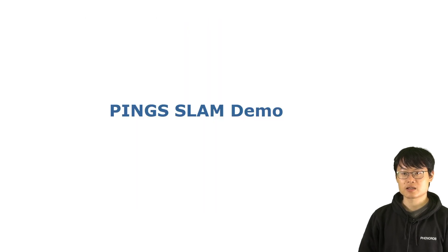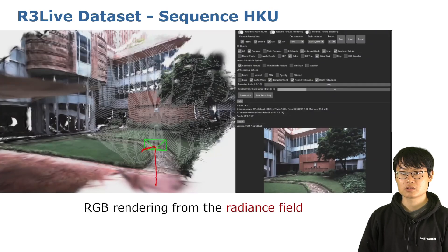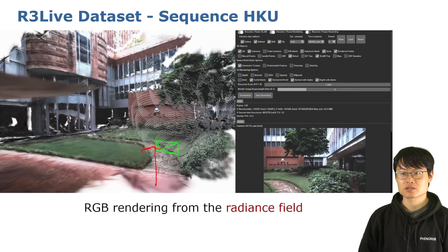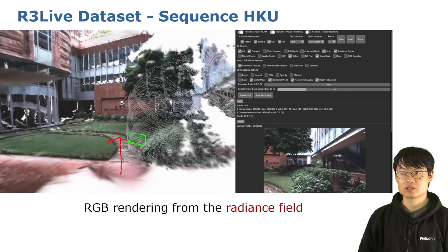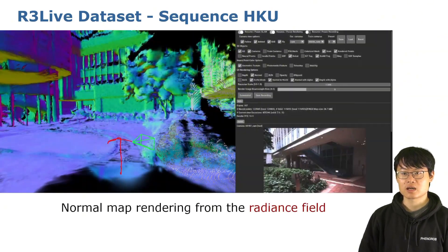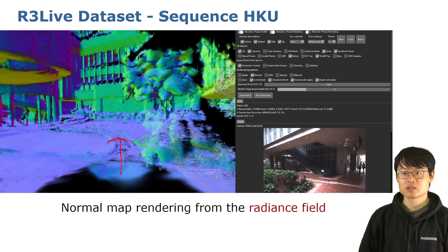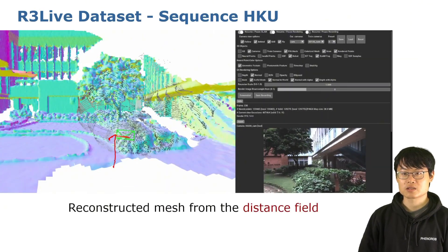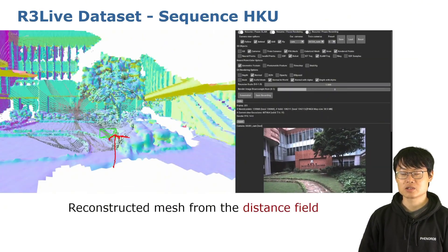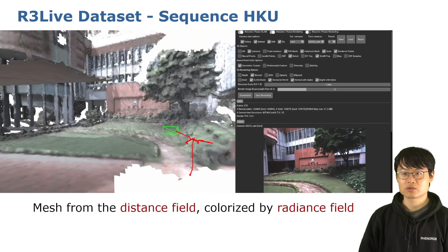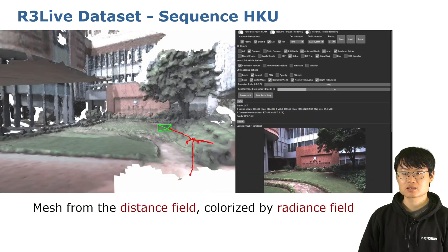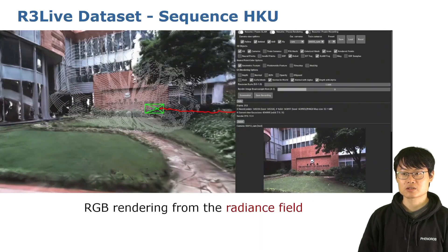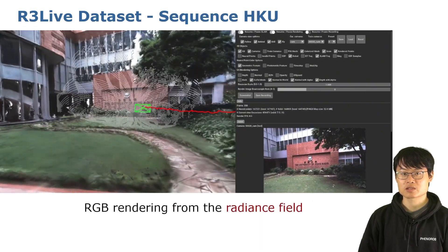We devise a LiDAR-visual SLAM system using the proposed map representation. Here we show the SLAM process on the RS-Relief dataset. Taking the LiDAR point cloud and image as input, our method is able to jointly build a high-quality radiance field for novel view rendering, and a distance field for mesh reconstruction and pose estimation.